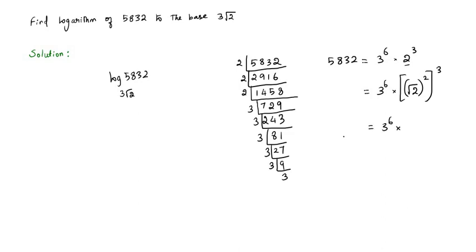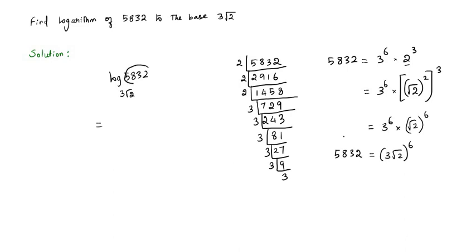For 3⁶, and for the square root of 2 we have the power 2 and then also the power 3, so we multiply both powers to get (√2)⁶. Now we have 3⁶ × (√2)⁶. Since two terms are multiplied with the same exponent, the exponent can be taken as common, giving us (3√2)⁶. So finally, 5832 = (3√2)⁶.